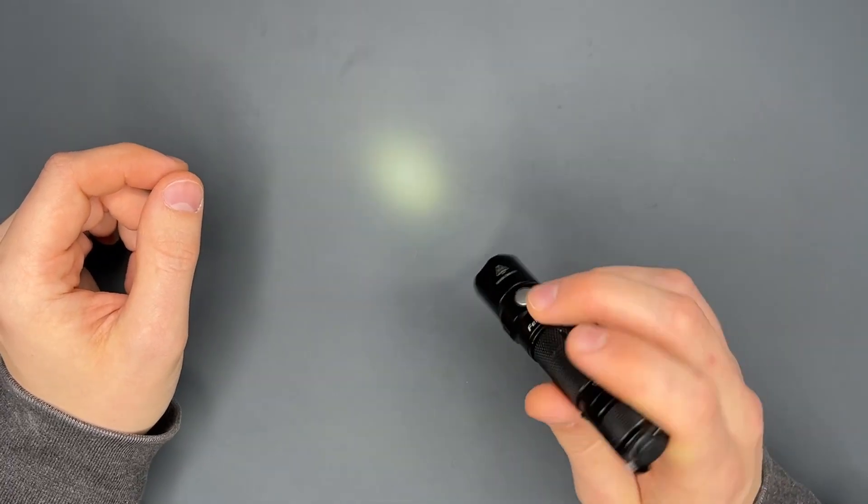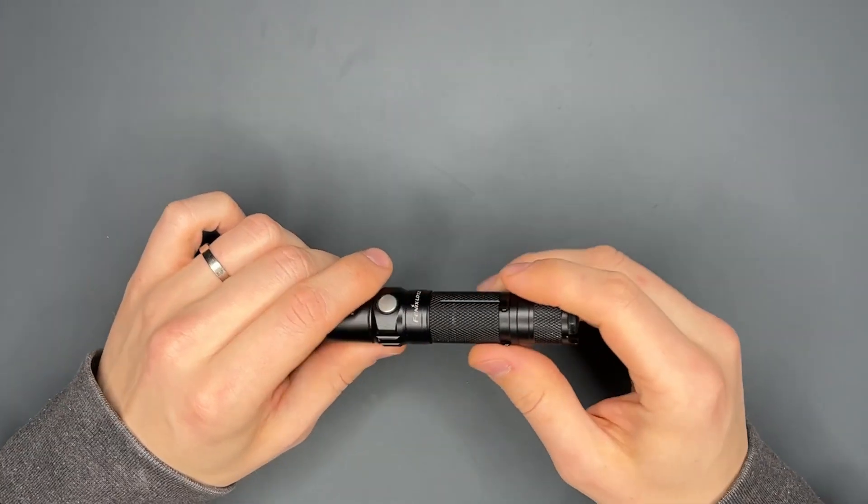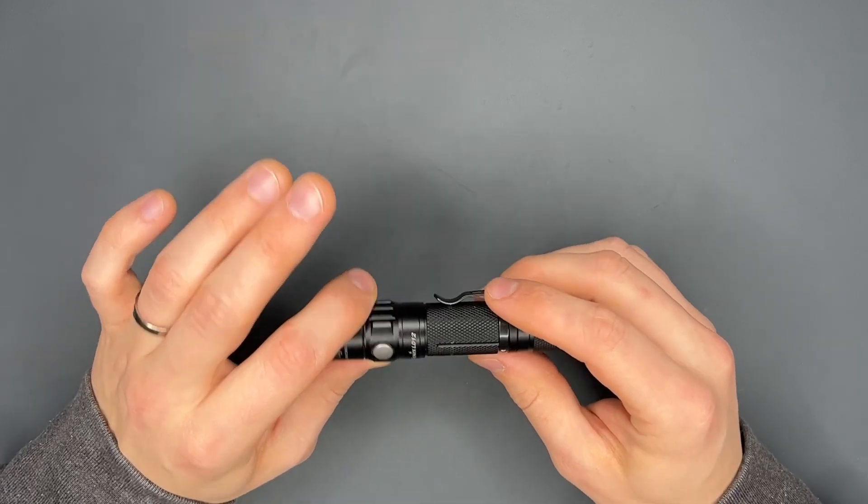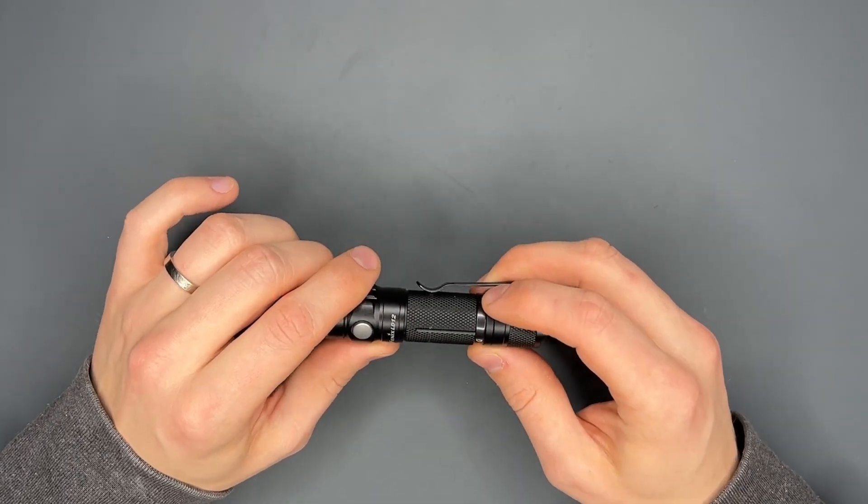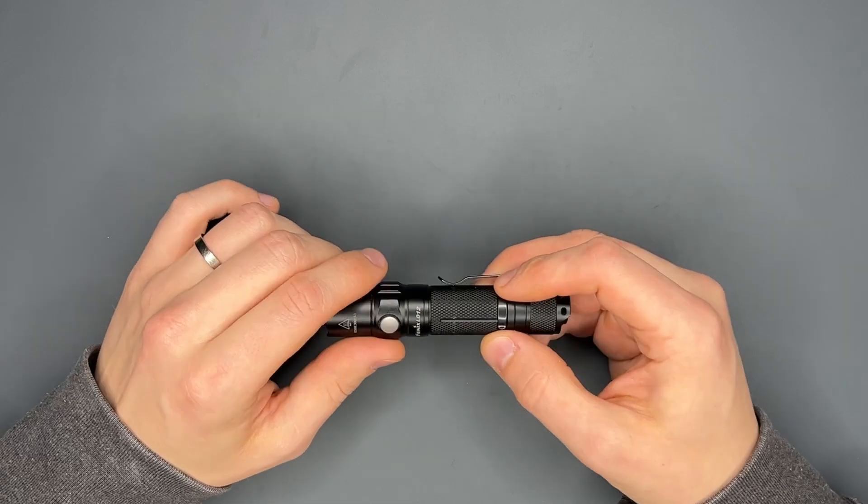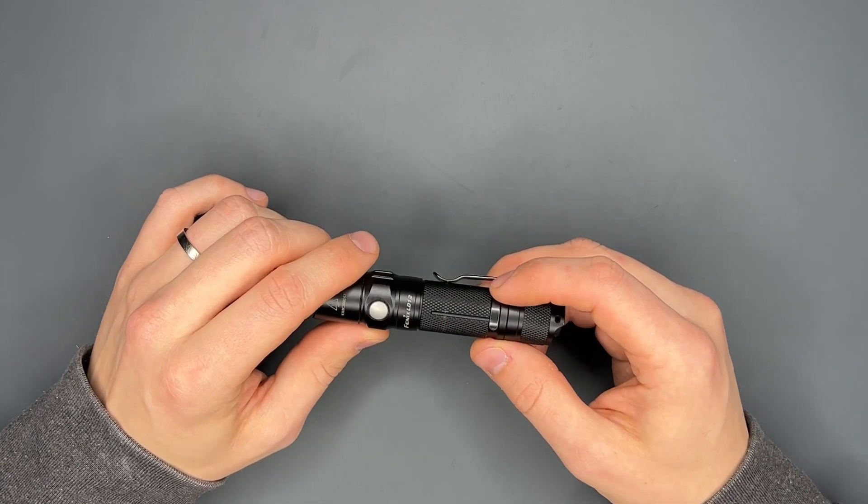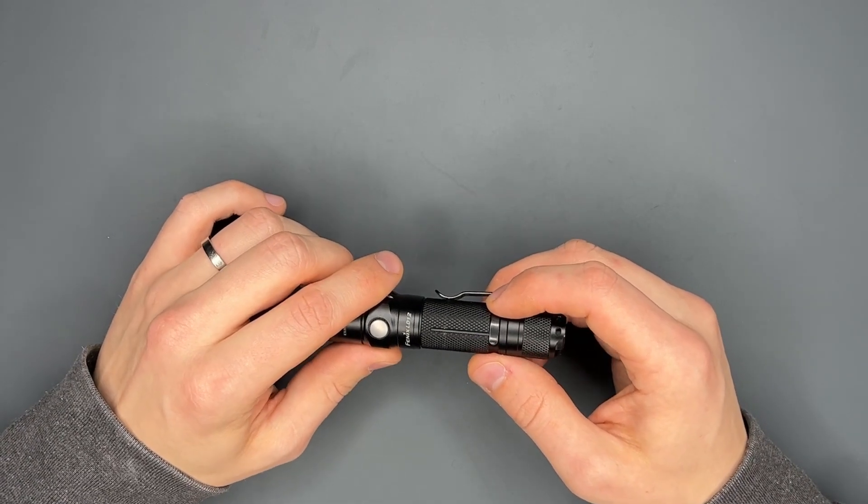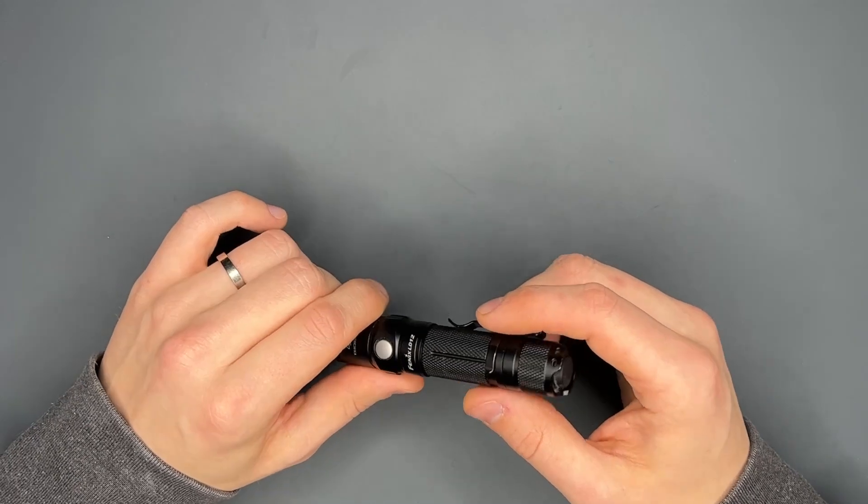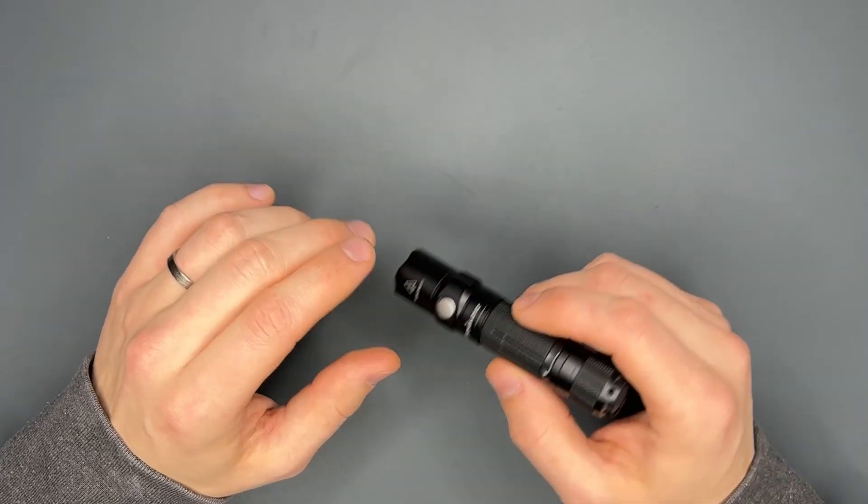This light runs on a couple different batteries. You can use a normal double A battery, you can use a rechargeable double A battery, or you can use a 14500 lithium ion battery. Depending on different battery types you get different run times, but they're in the same ballpark.